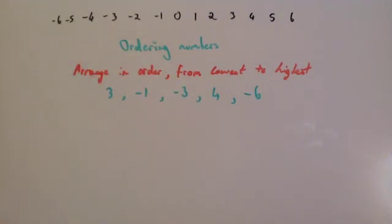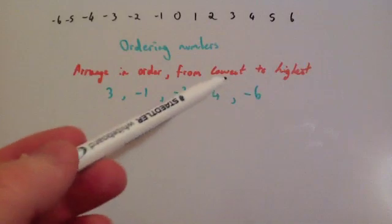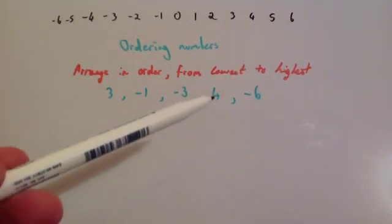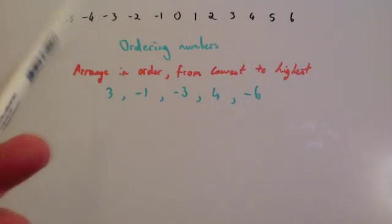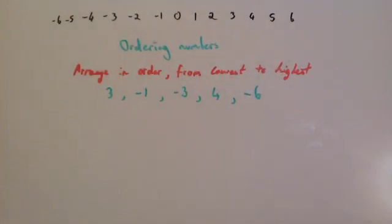So I like to think about it in terms of a context. But whenever you're arranging from lowest to highest, just remember that the lowest one is the one that would be furthest to the left on the number line and the highest one would be the one furthest to the right on the number line.